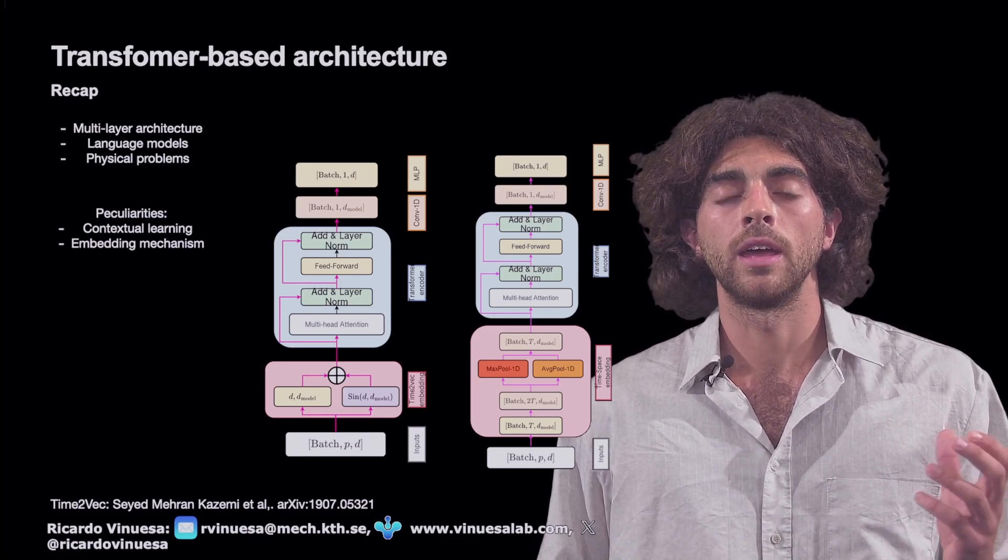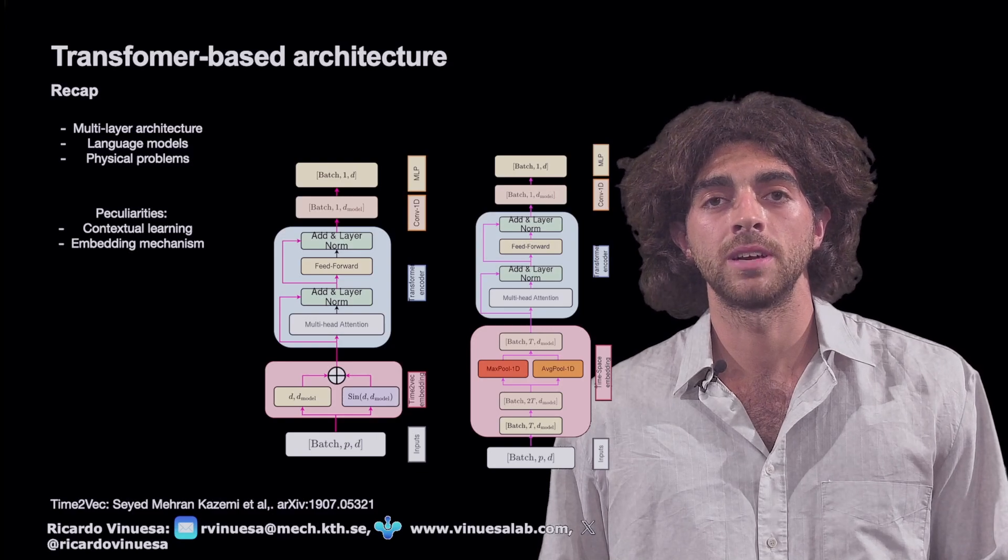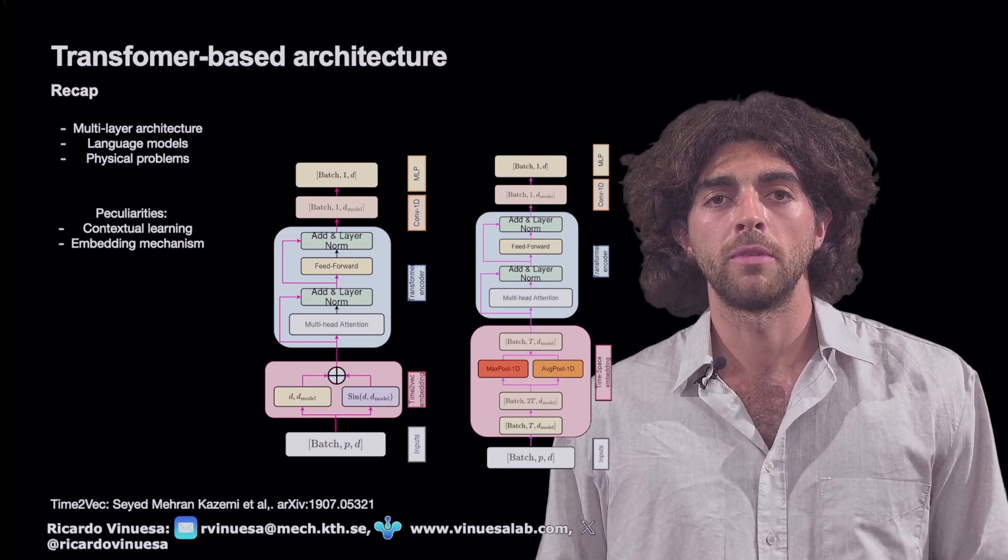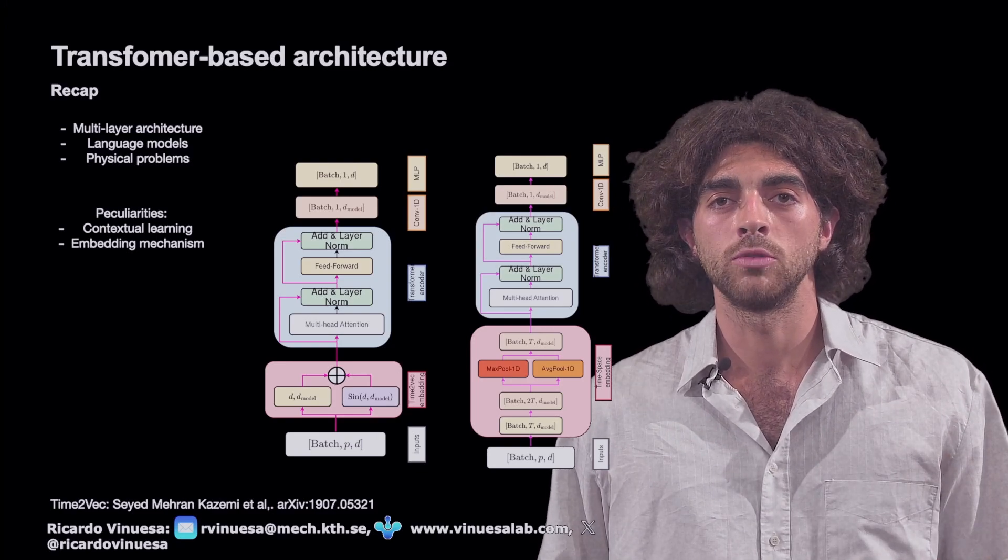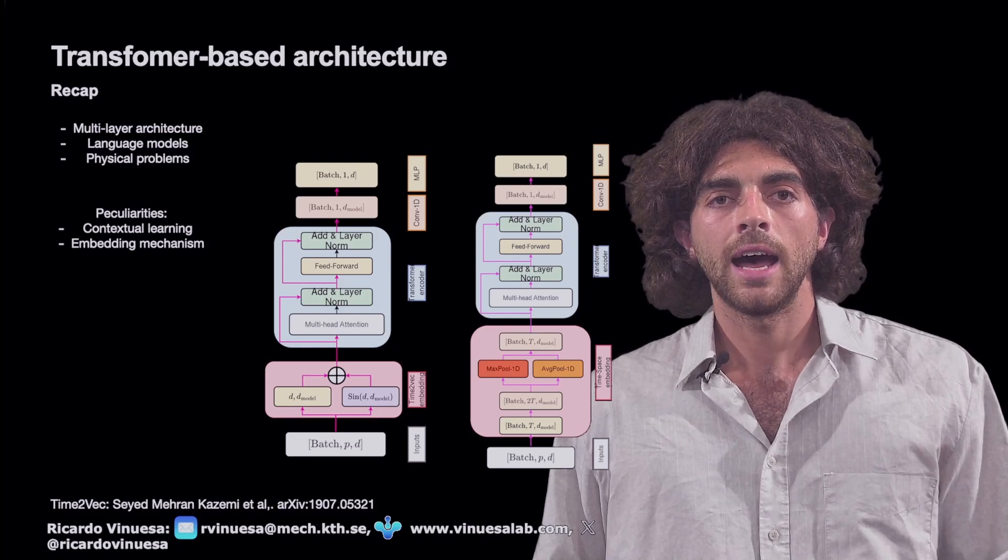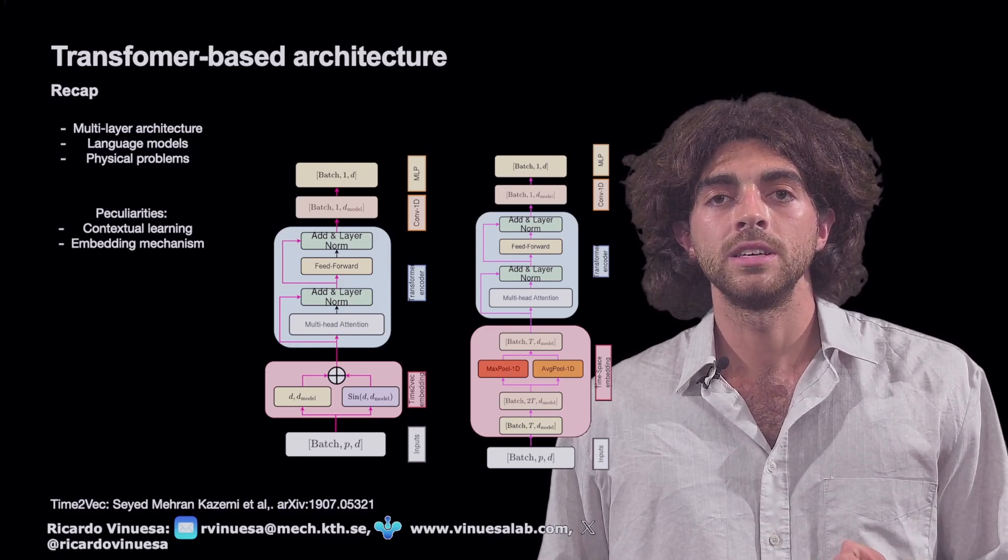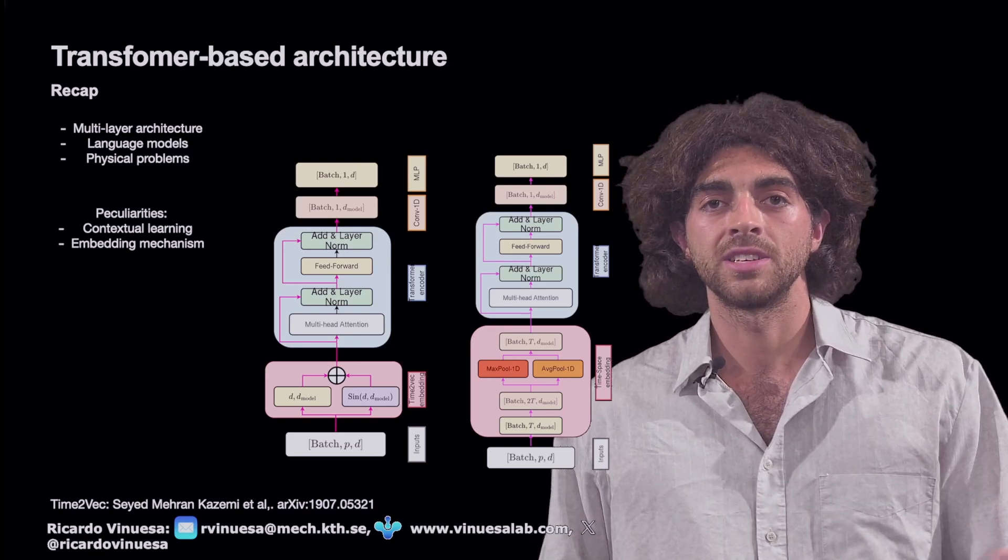One of the main peculiarities that the transformer had that we mentioned in the past that it's really important to remember in this video is the contextual capacity to learn different features, and also the embedding capabilities that one has in order to tokenize the information.